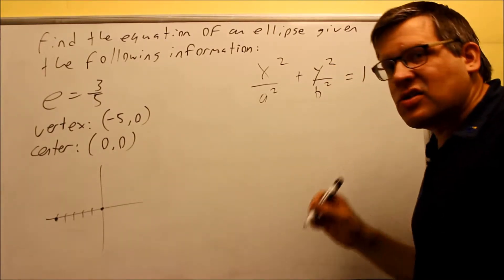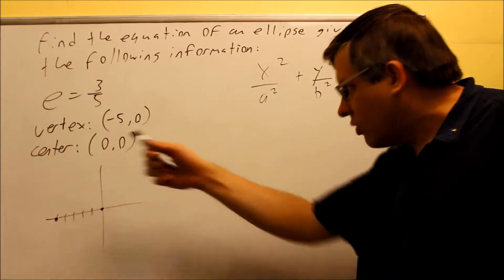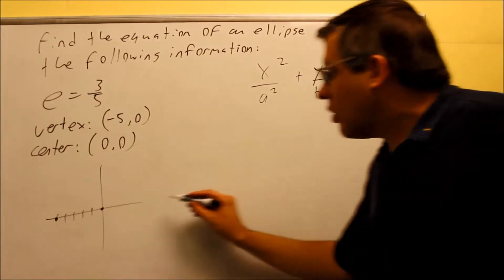I want an ellipse that's centered at (0,0), which it tells me it is, and I know it's opening sideways, which means that the a is the larger number that has to go underneath the x squared.